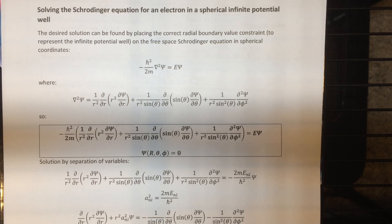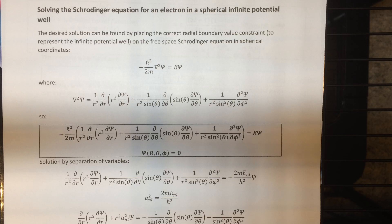In this video, I'm going to show you how to solve the Schrödinger equation for an electron in a spherical infinite potential well. I recently showed you how to solve the Schrödinger equation for an electron in a cylindrical infinite potential well, and now I'm going to do a spherical one. You could say that solving for this case is technically more complicated, but there's a shortcut I'm going to take that actually makes it overall easier.